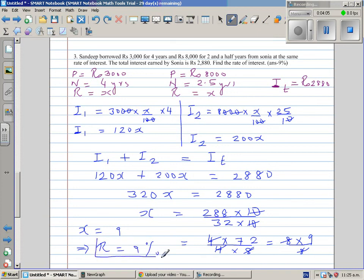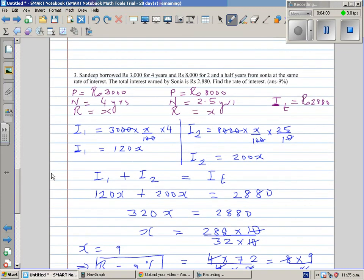Your rate of interest is 9%. So let's confirm whether our answer is right. So your I1 would be 120x which is 120 times 9. 12 times 9 is 108. So this is 1080 and this would be 200 times 9 which is 1800. So let's confirm 1800 plus 1080 is 2880. So answer is right.